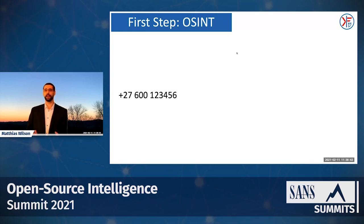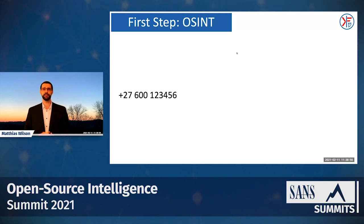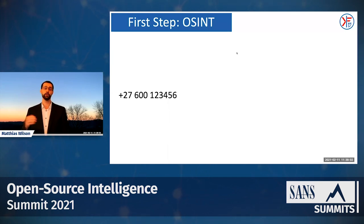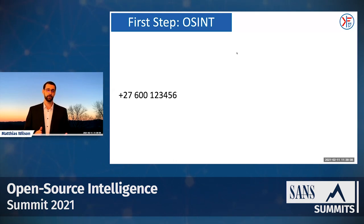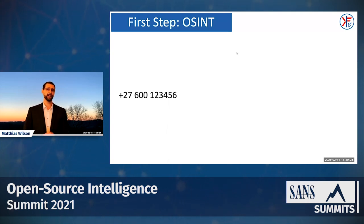Let's look at one example. Coming from SIGINT, I can tell you that phone numbers have a country code, a mobile network code indicating the provider, and then the subscriber number. Understanding how phone numbers are structured is relevant later when choosing which applications to feed the number into. In this case, plus 27 is the country code for South Africa, 600 is a South African mobile carrier, and then we have the subscriber number. Just by looking at this I know my investigation might lead to South Africa, so I'll look for data sources and popular apps there.